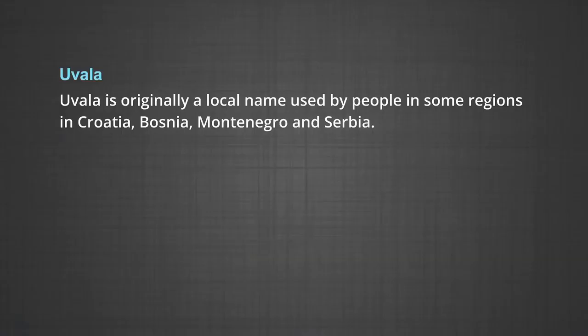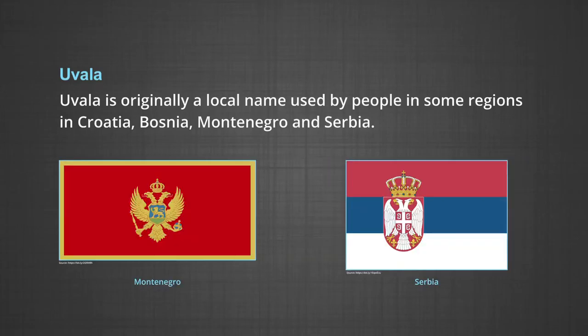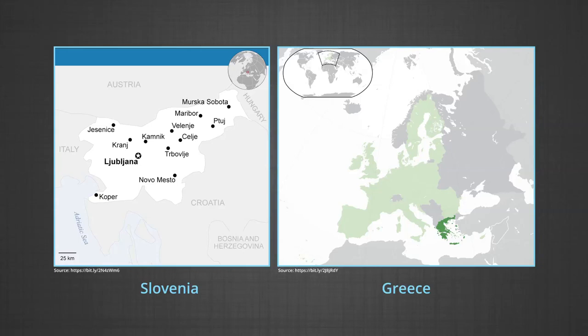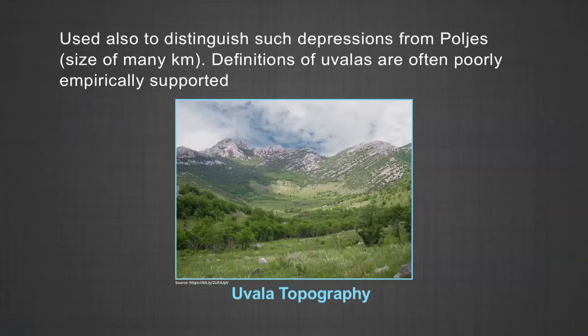When sinkholes and dolines join together because of slumping of materials along their margins or due to roof collapse of caves, long narrow to wide trenches called valley sinks or uvalas are formed. Uvala is originally a local name used by the people of some regions in Croatia, Bosnia, Montenegro, and Serbia. In geosciences, it denotes a closed karst depression, a terrain form usually of elongated or compound structure of larger size than that of a sinkhole. It is a morphological form frequently found anywhere between Slovenia and Greece. Large closed karst depressions are found on all continents, and uvala has become a globally established term used to distinguish such depressions from poljes, which are several kilometers in size.